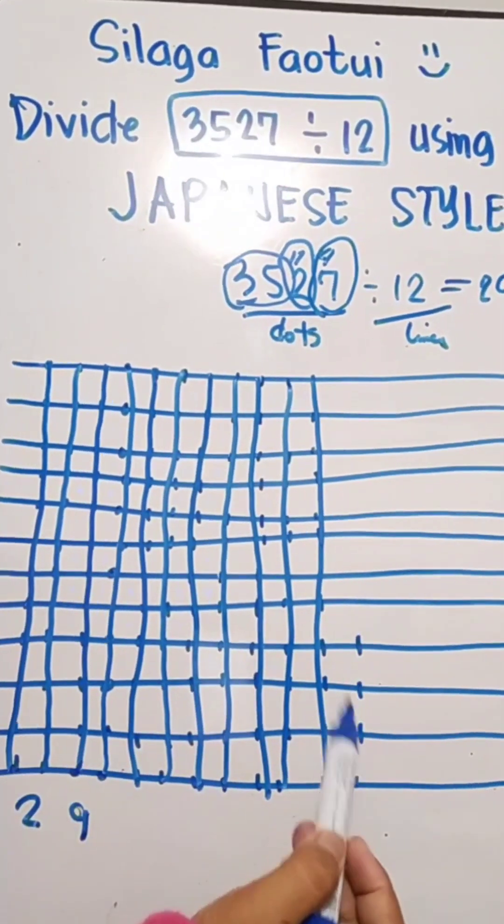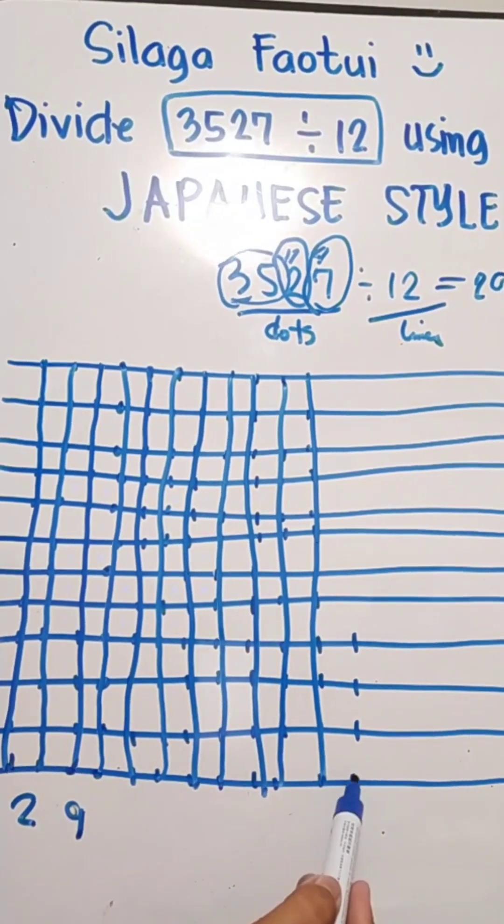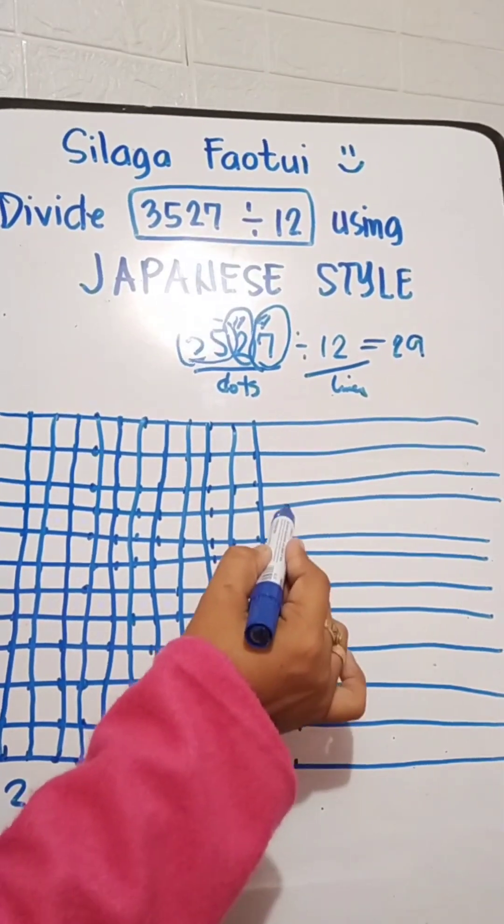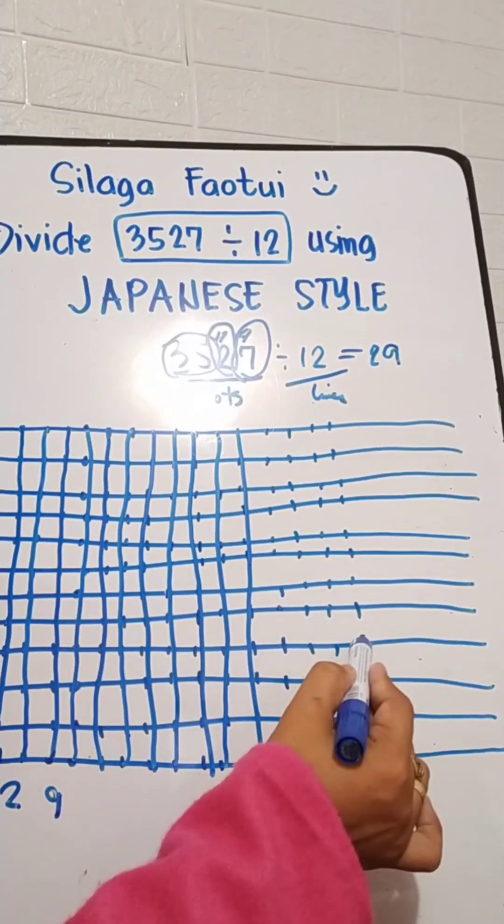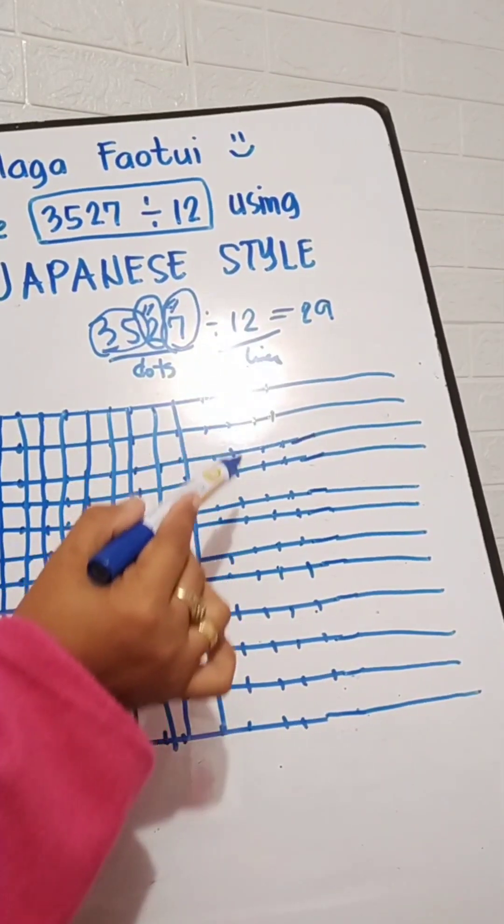So let's draw 47 dots. So we will just continue this one. 1, 2, 3, 4, 5, 6, 7, 8, 9, 10, 11, 12, 13, 14, 15... continuing up to 47.